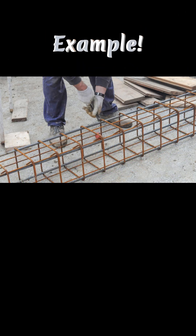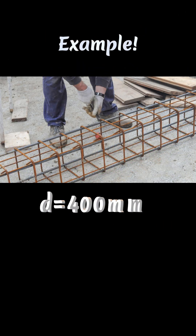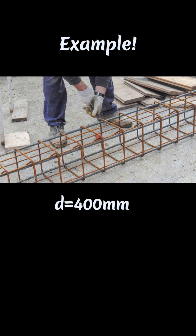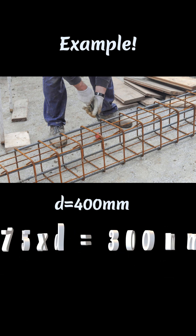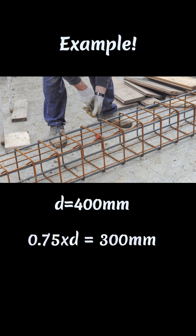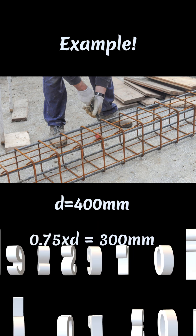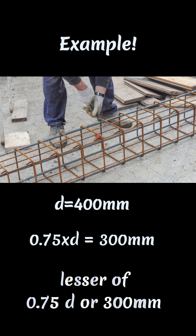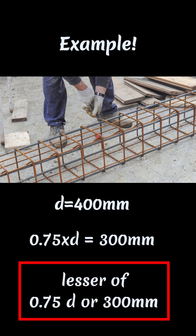Let's take an example. If the effective depth d is 400 mm, we calculate 0.75 times d, which gives 300 mm. As per IS-456, the maximum spacing shall not exceed 0.75d or 300 mm, whichever is lesser. Here, 0.75d is also 300 mm.